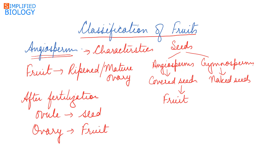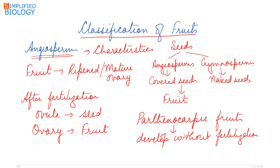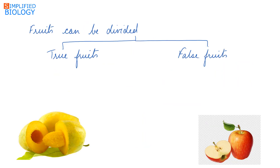Fruits that develop without fertilization are known as parthenocarpic fruits. These fruits are seedless. Examples include banana and grapes. Now fruits can be divided into two types: true fruits and false fruits.